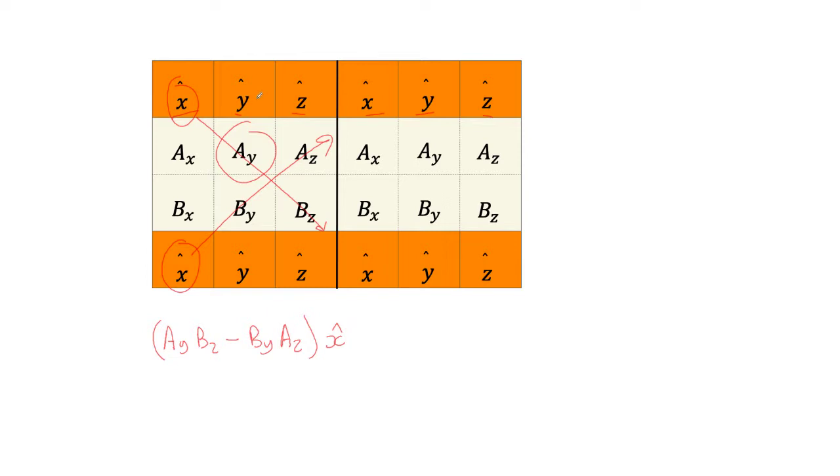Similarly for Y, you go diagonally down like this. So you get plus A_z B_x and then up from here minus B_z A_x.